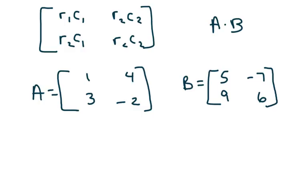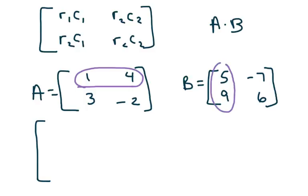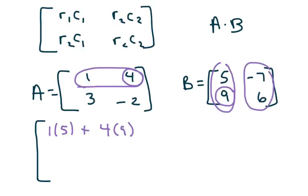We have two matrices and we're going to multiply them. I'm going to make it kind of big here. Rows go across — this is row 1. Row 1 times column 1: we multiply 1 times 5, then take the second elements, plus 4 times 9. When you add that together you get the first element. The second part is row 1 times column 2: 1 times negative 7, plus 4 times 6.